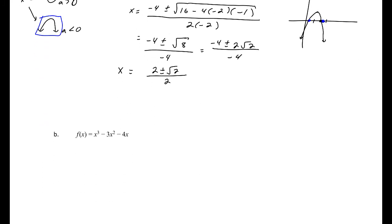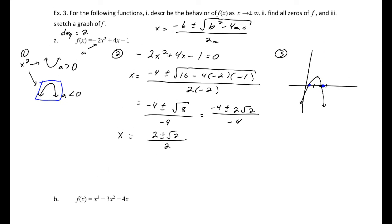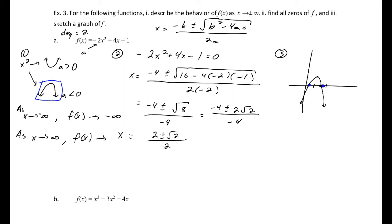To write the end behavior precisely: as x goes to negative infinity, f(x) goes to negative infinity, and as x goes to positive infinity, f(x) also goes to negative infinity — consistent with a downward-opening parabola.